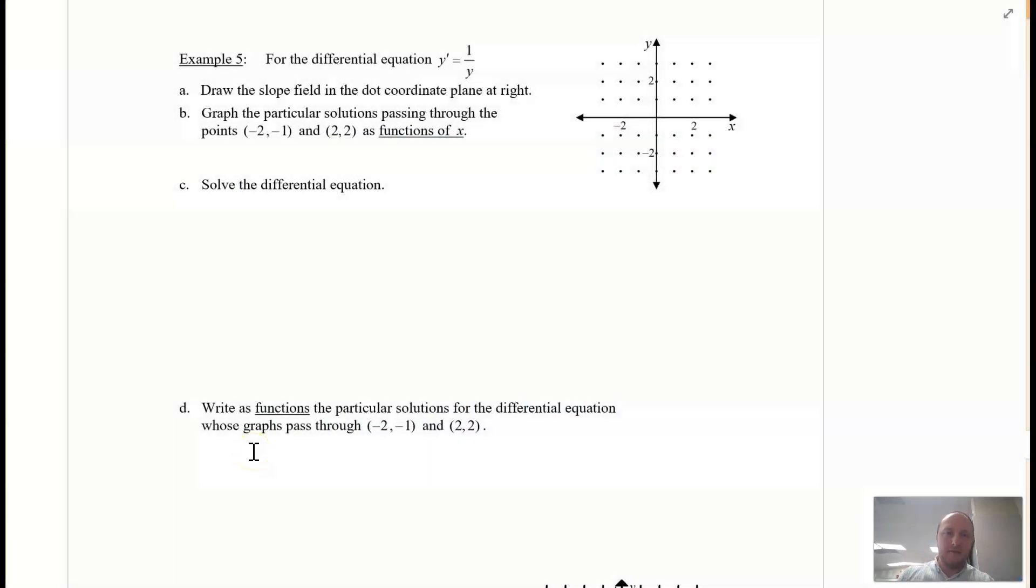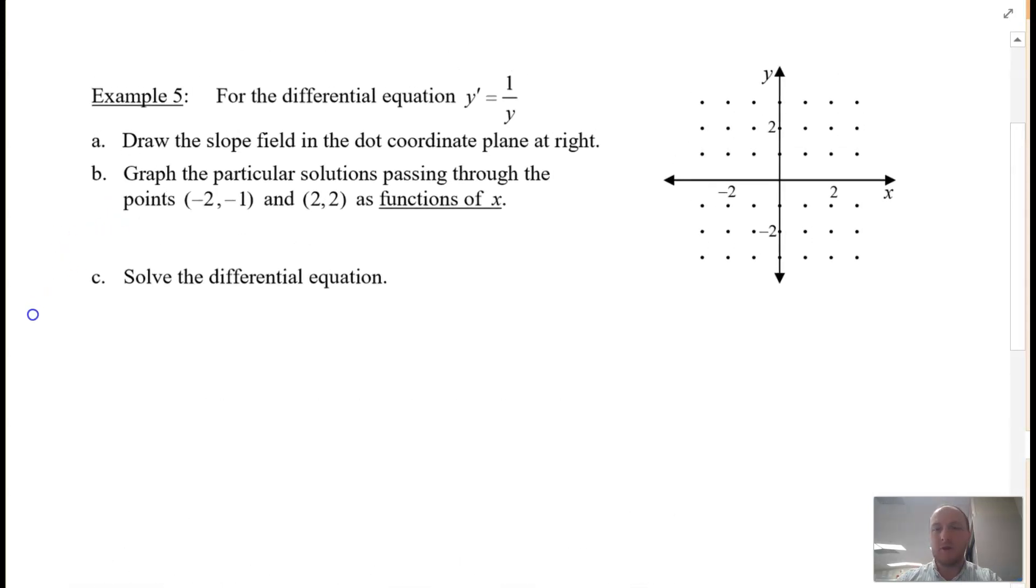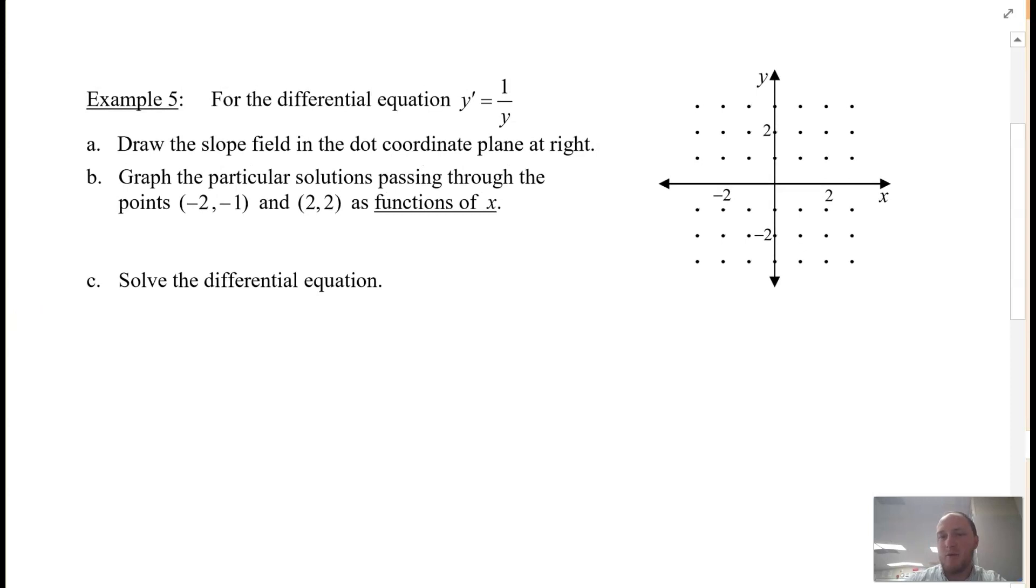Alright, so example 5. Here we have a differential equation y' = 1/y and they want us to draw the slope field in the dot coordinate plane at the right. Our slope is 1 over y, so I can take the y value. The y value is 1, so 1 divided by 1 is just 1, so that's what our slope looks like. And the great thing is that it's going to be exactly the same for all of these dots. The slope is going to be 1 because the y value is 1.